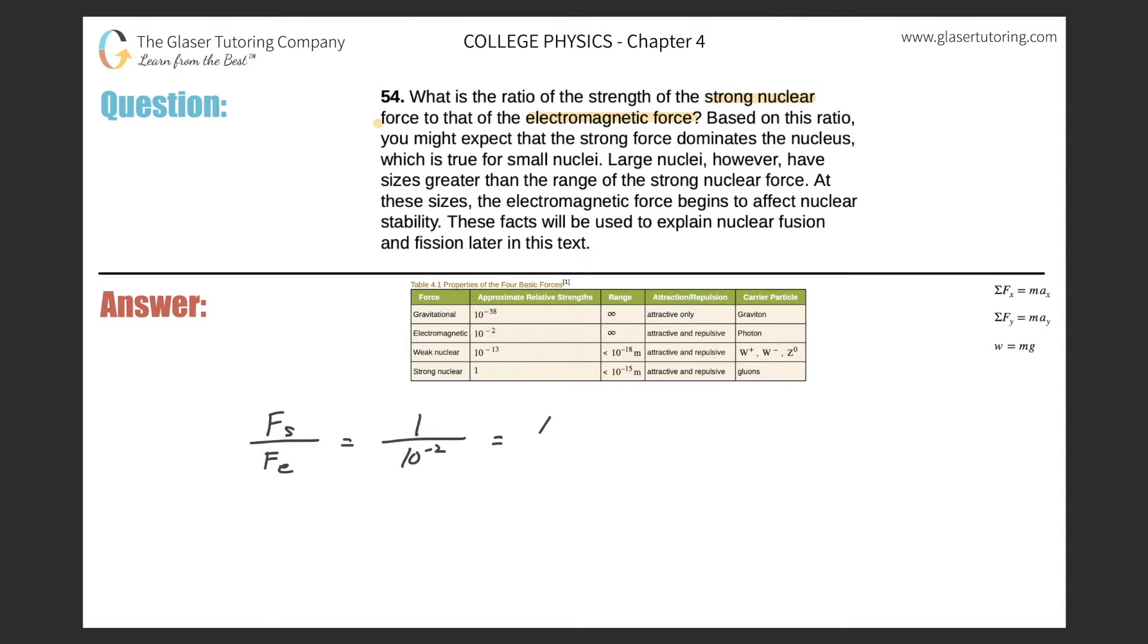When I do the division, this becomes 10 to the positive two. So basically, the strong nuclear force is 100 times stronger than the electromagnetic force.